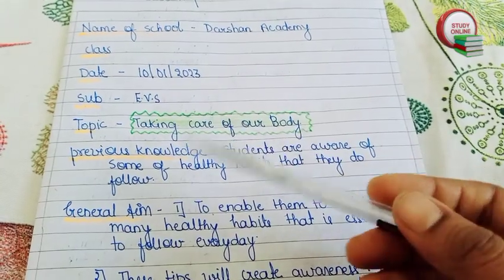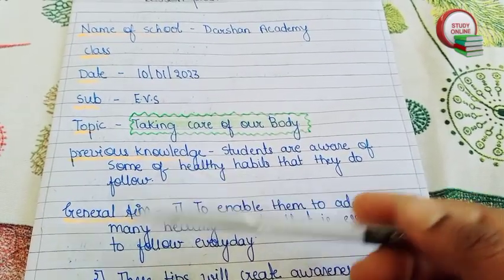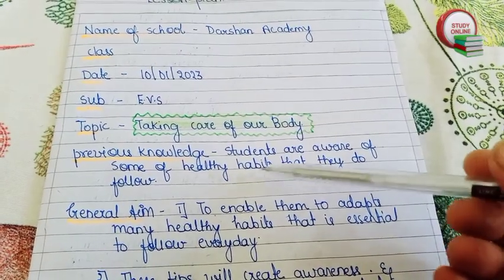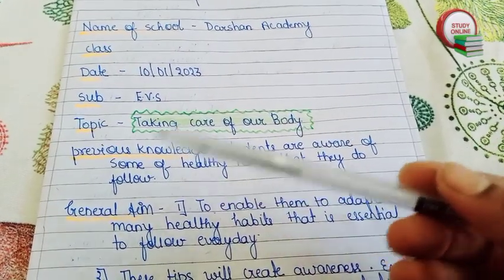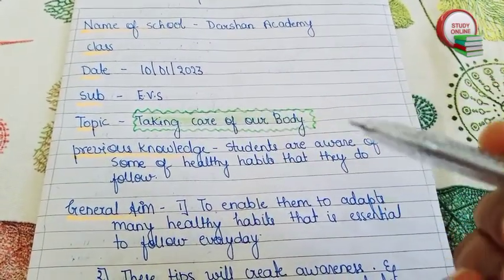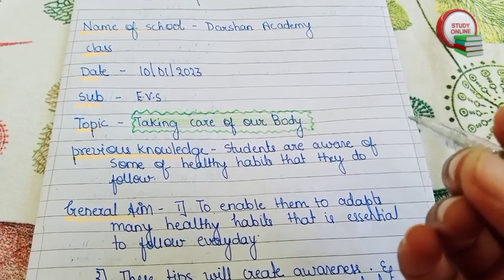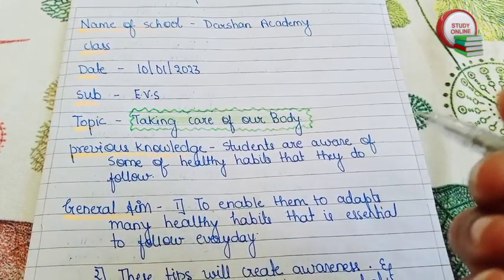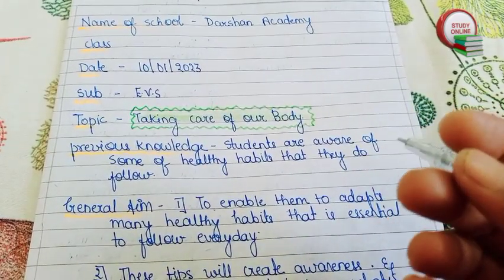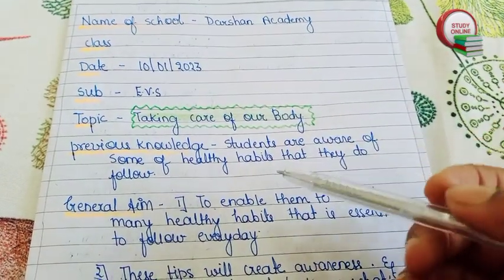For previous knowledge, we always have to write what students are already aware of. Students are aware of many healthy habits — they know little habits like washing hands and similar things, since they are in Class 3.